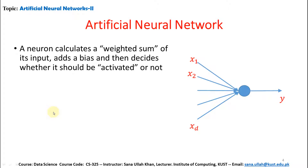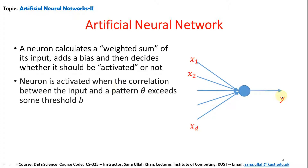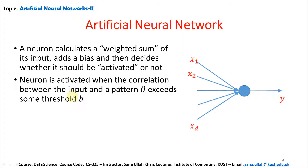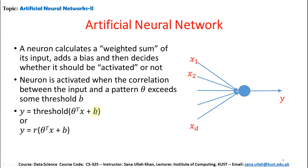What is an Artificial Neural Network? A neuron collects a weighted sum of the inputs, adds a bias, and then decides whether it should be activated or not. Vectors are added, the sum is checked, the activation function is used, and then it produces the output. A neuron is activated when the correlation between the input and a pattern theta exceeds some threshold B. The formula is: Y = R(theta_T * X + B), where R is called the activation function.